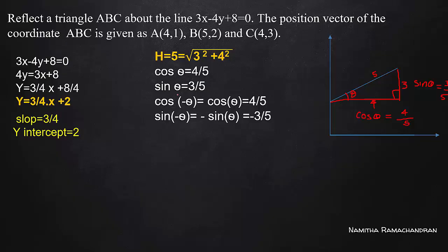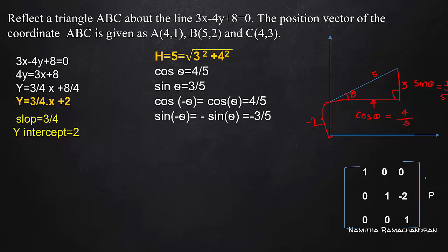So cos theta equals 4 by 5 and sin theta equals 3 by 5. Cos minus theta equals cos theta equals 4 by 5, and sin minus theta equals minus sin theta equals minus 3 by 5. These are the four terms: cos theta, sin theta, cos minus theta, sin minus theta. Then we construct the composite transformation matrix. First the object point, then translation to origin with translation value minus 2 — x translation is 0, y translation is minus 2.